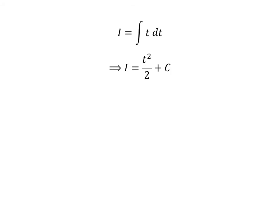This is a simple integration. The integral of t is square of t upon 2, so I is equal to square of t upon 2 plus capital C. Capital C is the arbitrary constant of indefinite integral, never forget to add this constant.